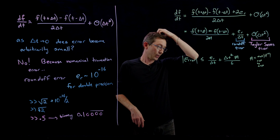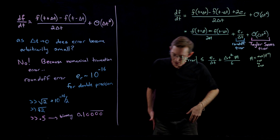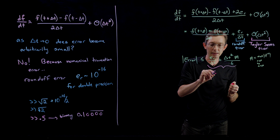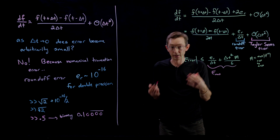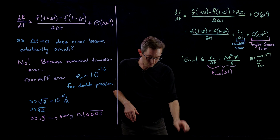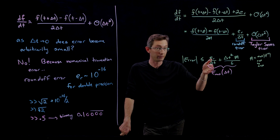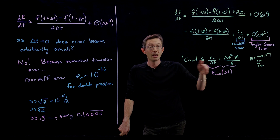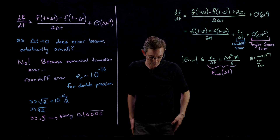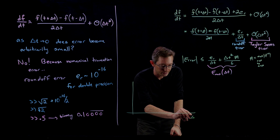Now E_max is a function of Δt. We want to optimize this, so we take the partial derivative of E_max with respect to Δt and set it equal to zero — that's where we find the minimum error. Let me draw a picture: on the horizontal axis is Δt, and the Taylor series error gets smaller and smaller as Δt decreases — a nice quadratic function, order Δt squared.